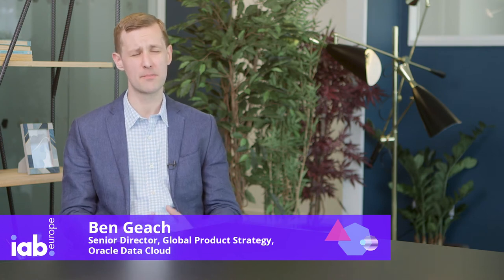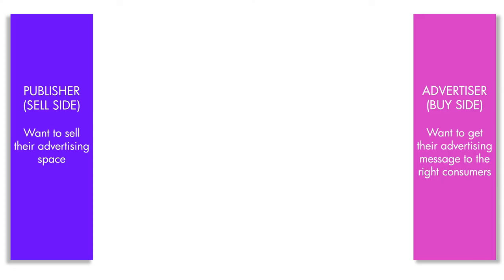Within programmatic trading there are two pillars: the buy side and the sell side. The buy side are advertisers and agencies who have got their message that they want to put forward in front of consumers. The sell side are the publishers who have got space on their websites that they want to sell advertising on.